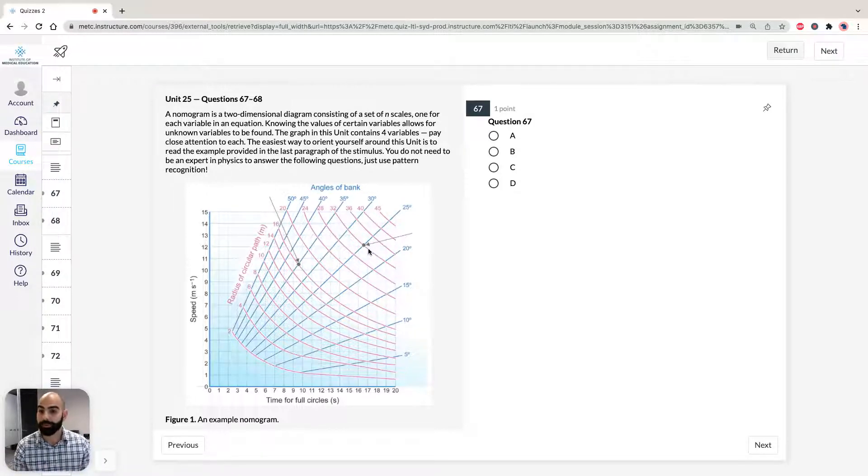Now, you don't have to be an expert in physics to answer the following questions, you just have to use pattern recognition and just know some simple arithmetic and utilize some simple mathematics. Now, if we take a look at the first question, 67, it says a bird of mass 2 kilograms. Now, you probably noticed for questions 67 and 68, the mass of the bird is irrelevant. And I'll go through why, especially in 68.